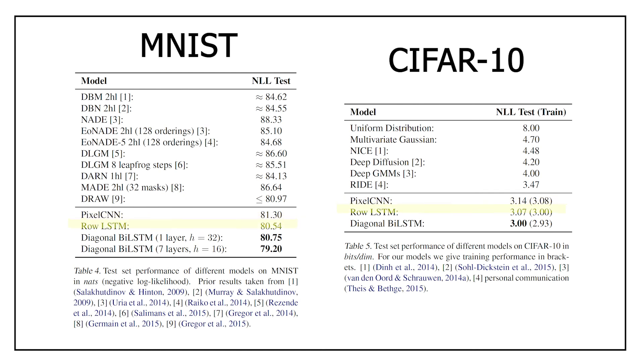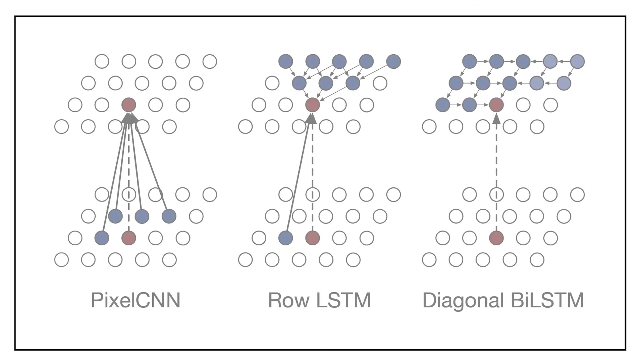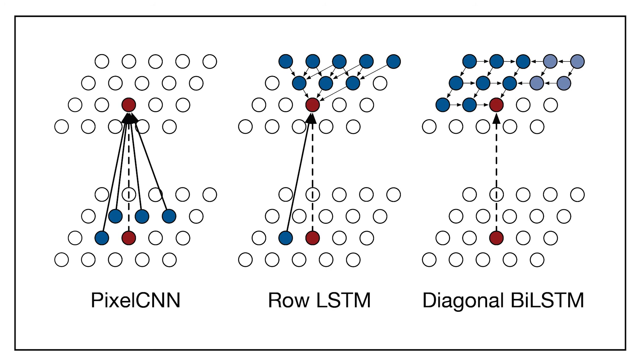PixelCNN coming forward, Row LSTM second, and Diagonal BiLSTM at the number one spot. We could have expected these results as it matches with the size of their respective receptive field.